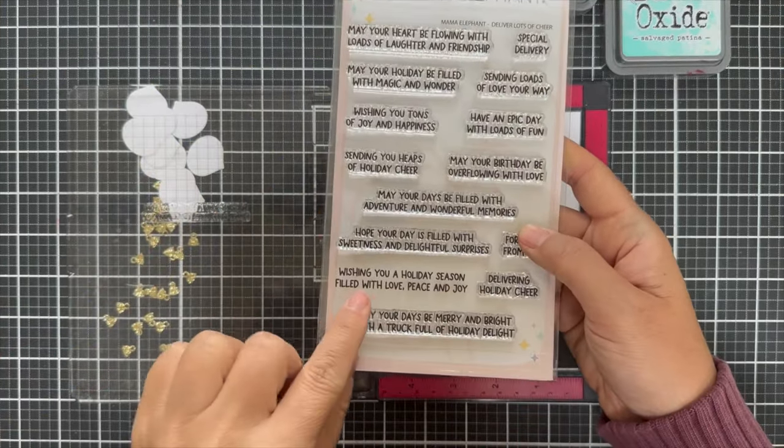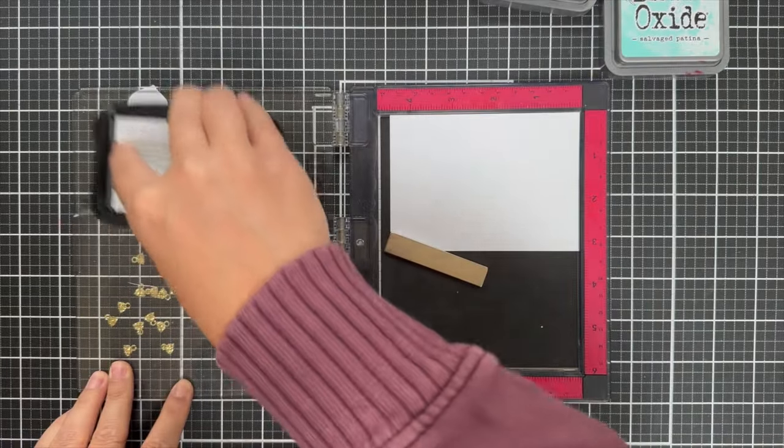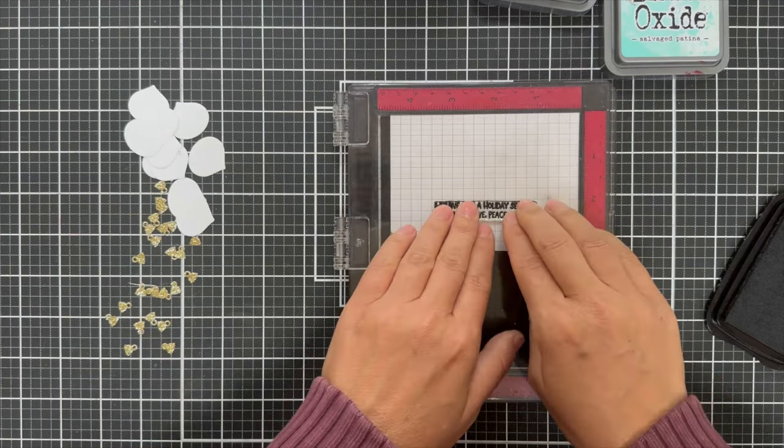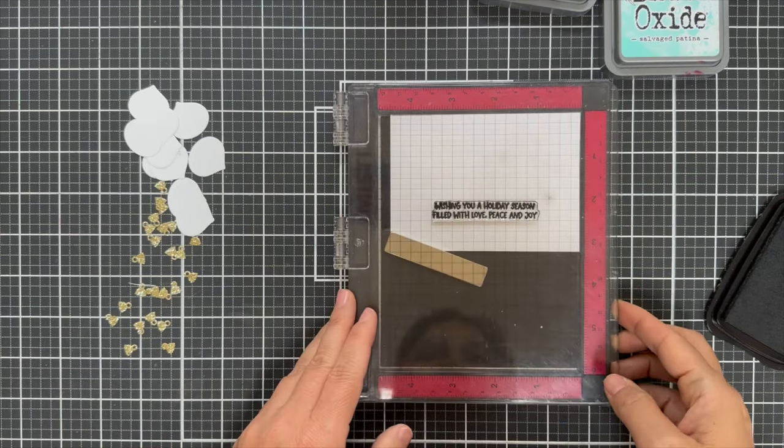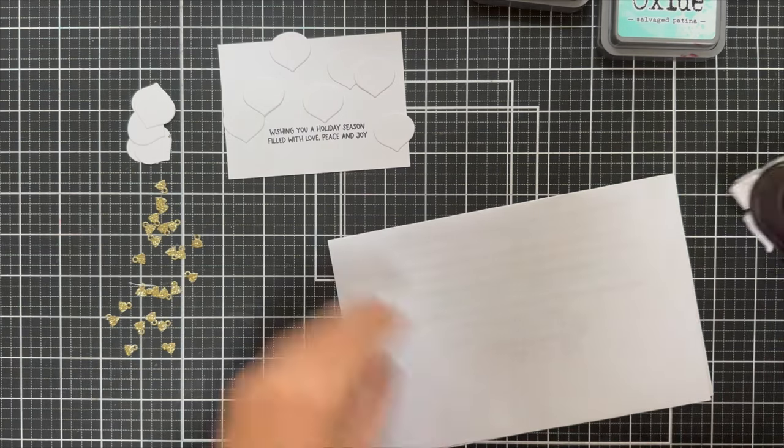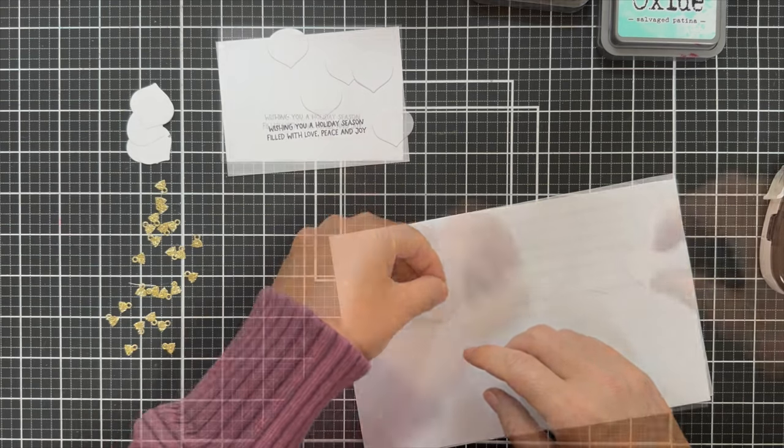Now I'm going to show you one using the positive ornaments. Another sentiment stamping from the deliver lots of cheer. I'm just going to stamp this in VersaFine onyx black ink on a panel of white cardstock. And then I'm going to color in my ornaments. So I just temporarily adhered them to some scrap paper just to hold them down so that I could add a little blending for color.